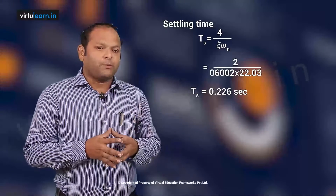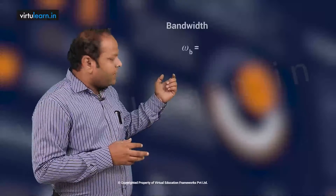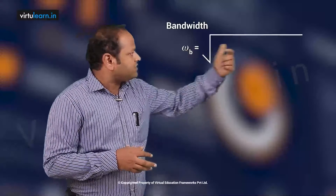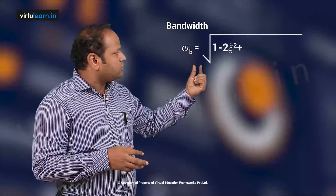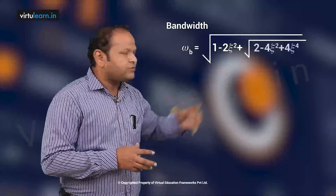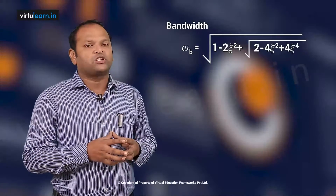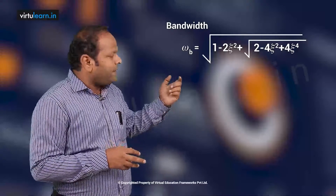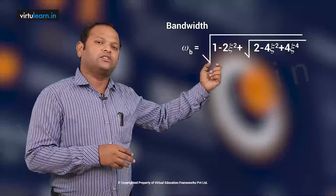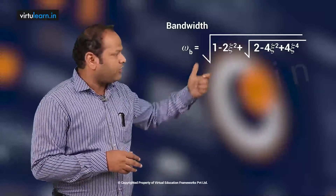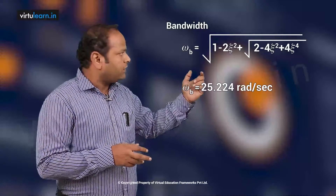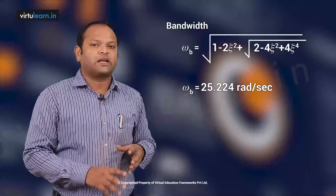For bandwidth, the formula is ωb = ωn × √[(1 − 2ζ²) + √(2 − 4ζ² + 4ζ⁴)]. Since bandwidth depends only on ζ and ωn, substituting ζ = 0.602 and ωn gives ωb ≈ 25.224 radians per second.